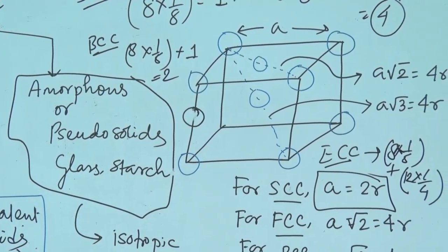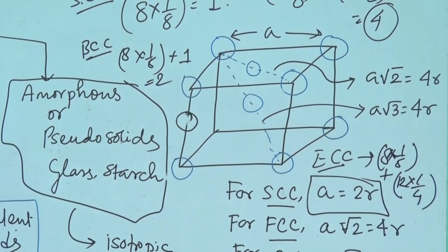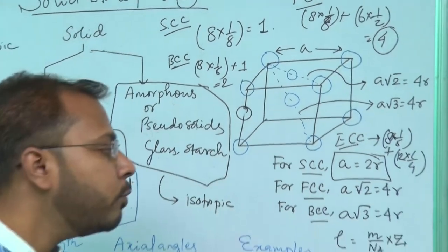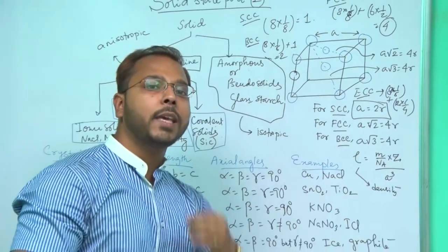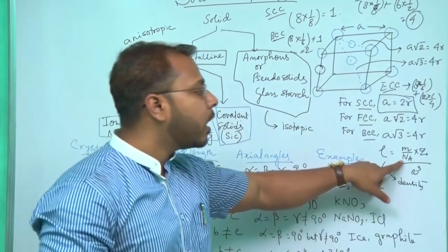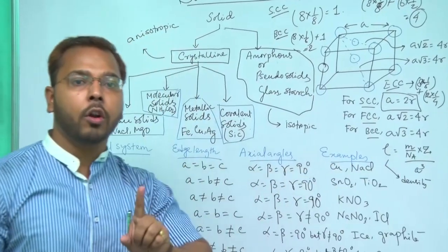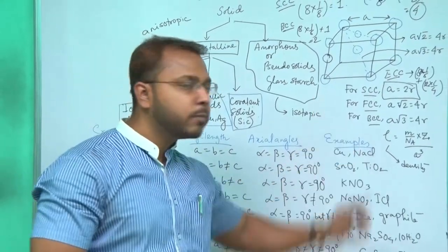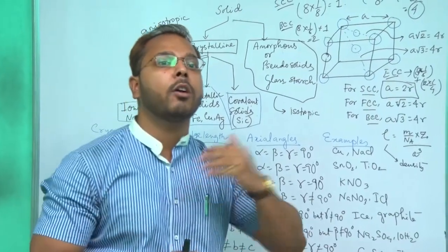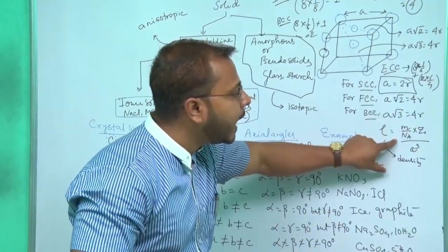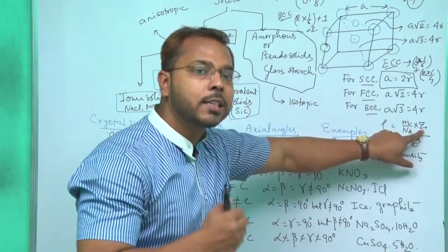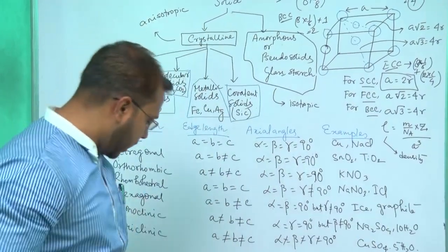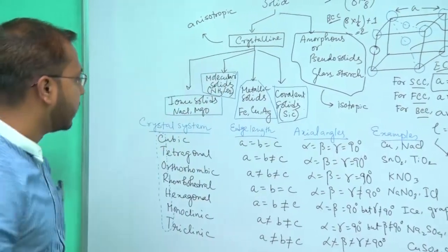Now for the density formula: density = total mass / total volume. Since we are considering a cubic system, the volume = a³. If the atomic mass is M, then the mass of each atom = M / Nₐ (where Nₐ is Avogadro's number). Total mass = (M / Nₐ) × Z, where Z is the number of atoms per unit cell. So density = (Z × M) / (Nₐ × a³).